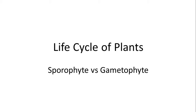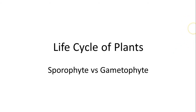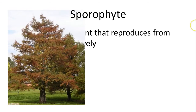We're going to have a very interesting look at the major types of plants. The sporophyte is the part of the plant that reproduces from spores or vegetatively. When we look at the sporophyte, we're talking about something that's diploid, and since it is diploid in nature it tends to be the dominant part — but we're going to look at these quite differently.